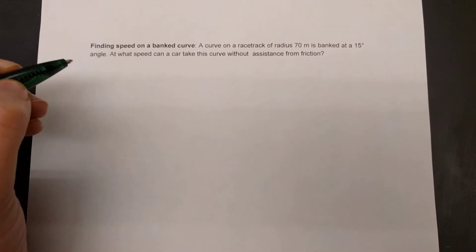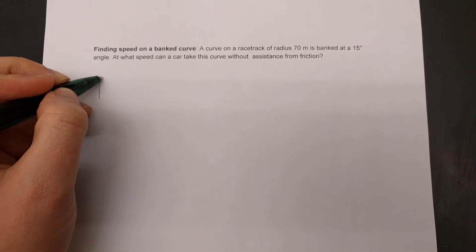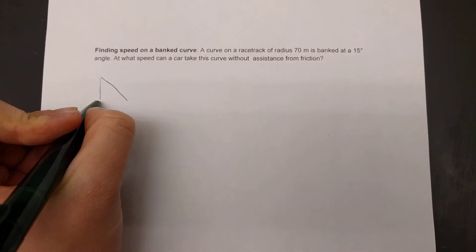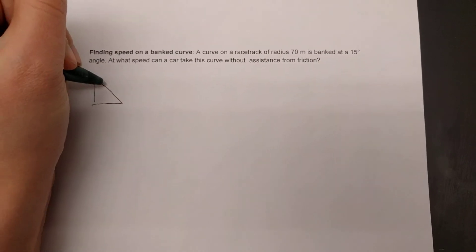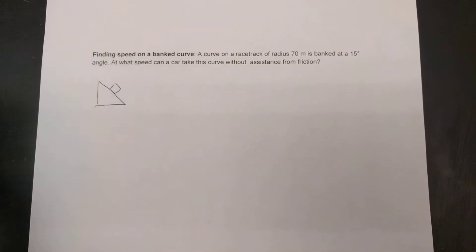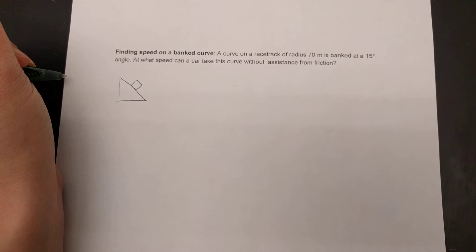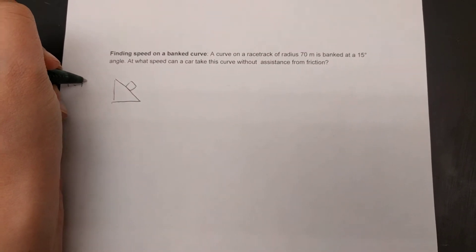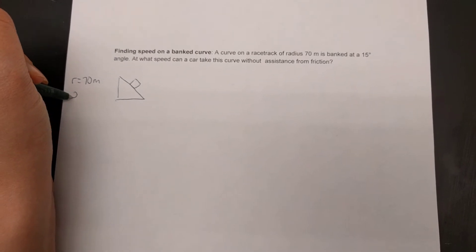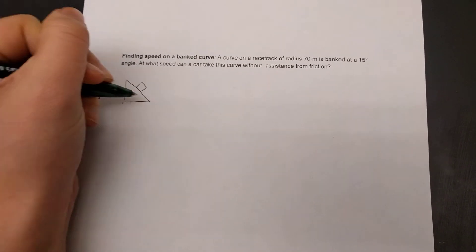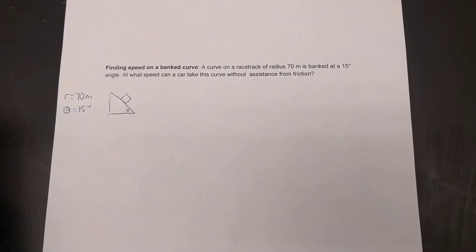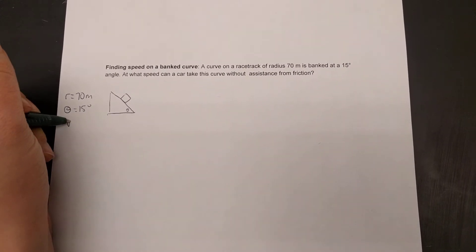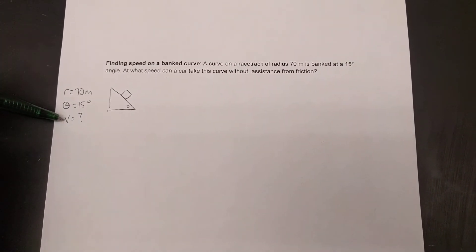Alright, so we have a banked curve. That reminds me of a triangle, and our car is on this banked curve. I'm going to list things that we know over here to the left. We have a radius of 70 meters, and our angle is 15 degrees, and that's the angle theta here in my diagram, and we want to know the speed it takes.